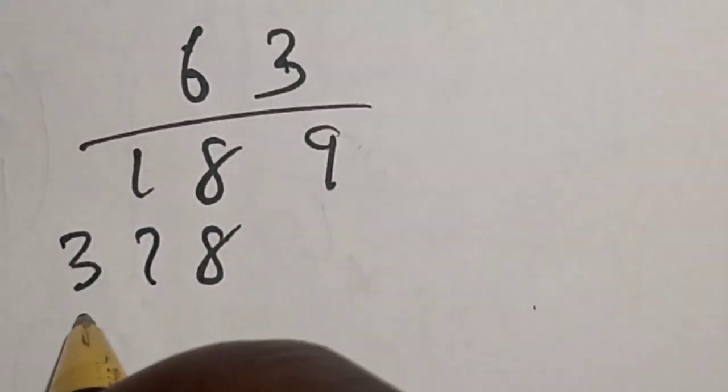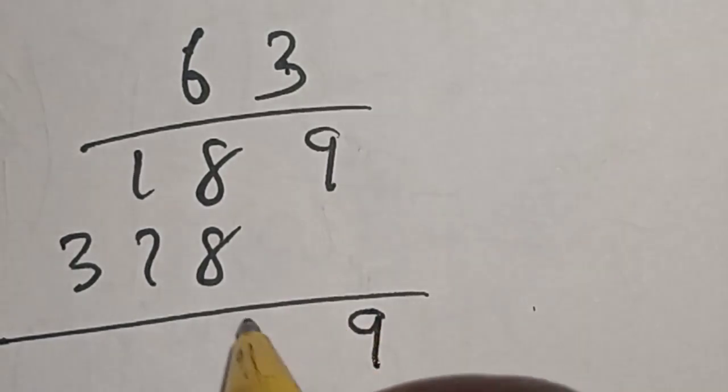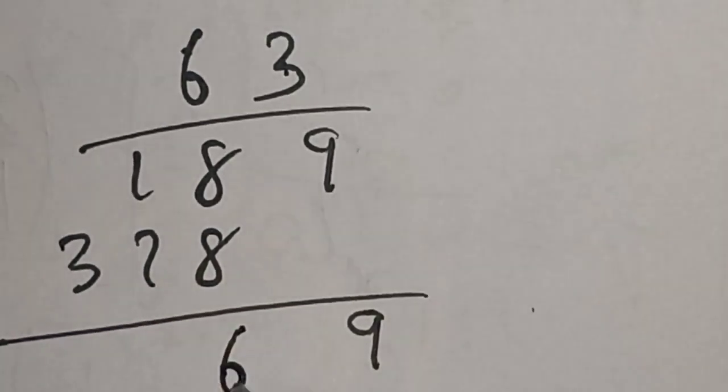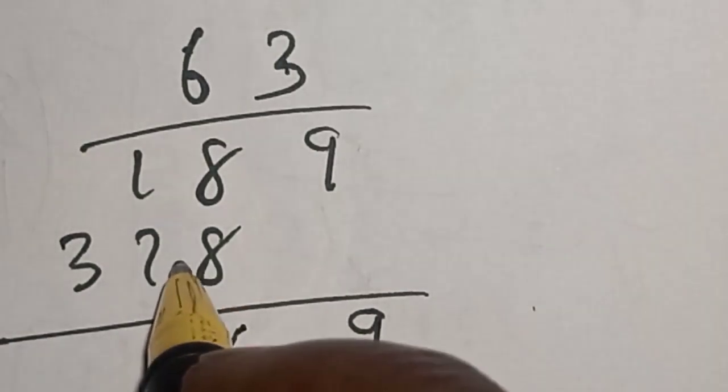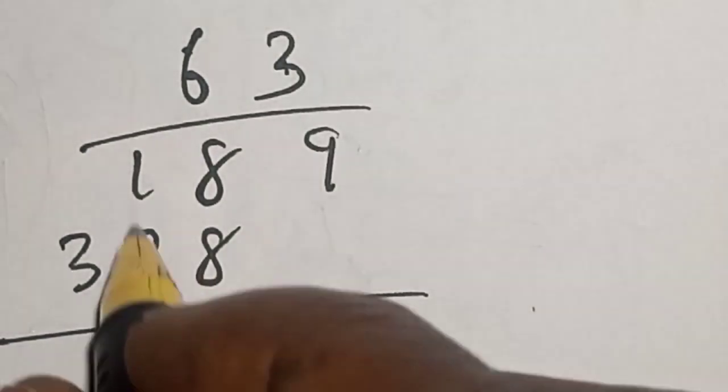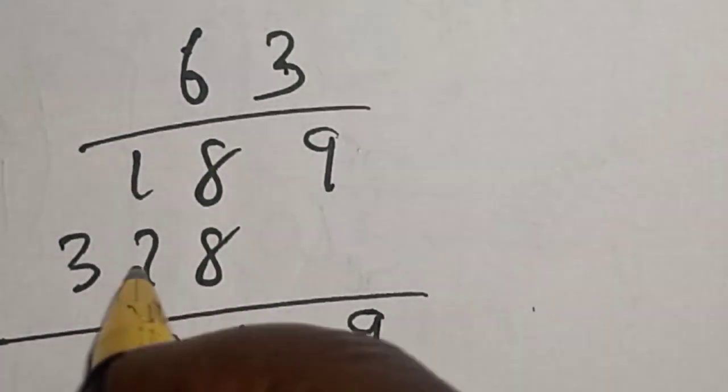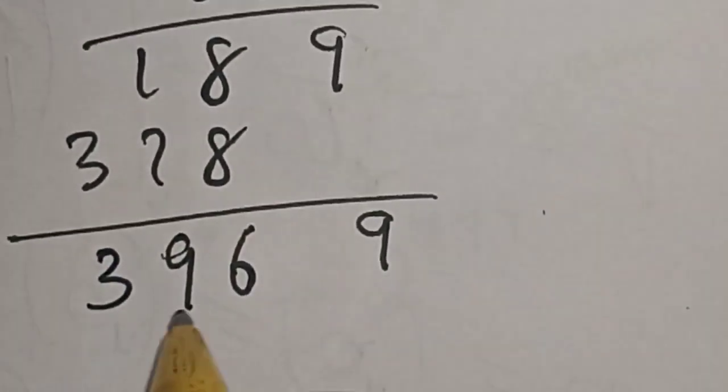Then 6 times 6, 36 plus 1, this is 37. So we have, let's sum it together. 9, 8 plus 8, this is 16, then remain 1.